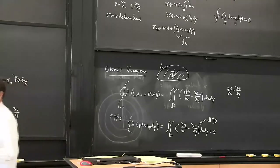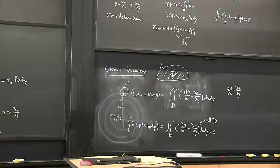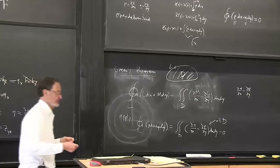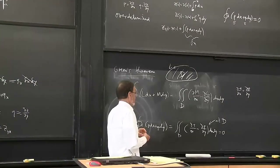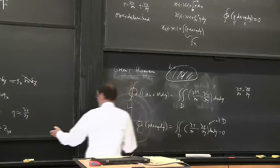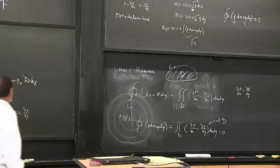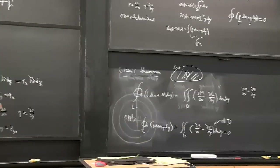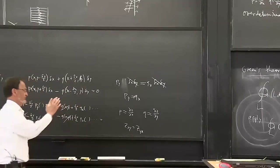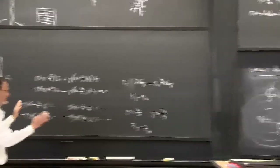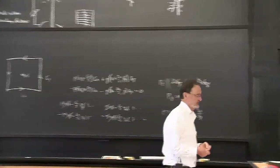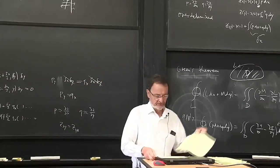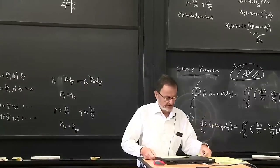That again confirms the conclusion we arrived at by making a small square and using Taylor series - this is a slightly more elegant way of getting to the same thing. So our P and Q do not satisfy that constraint.